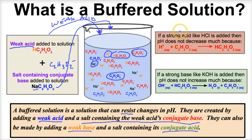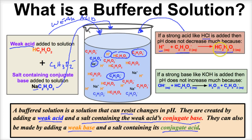So what ends up happening is if you introduce a strong acid like hydrochloric acid to this solution, it's going to dissociate completely in water. The free-floating hydrogen ions are going to bond with the conjugate base C2H3O2- to produce the weak acid. Because those H+ ions get used up bonding with the conjugate base, there are no additional H+ ions floating around in the water, and therefore the pH of the solution won't decrease.